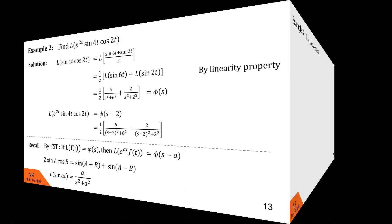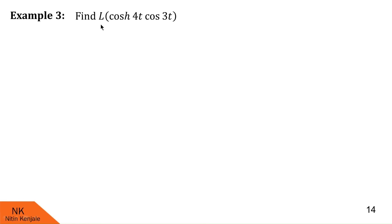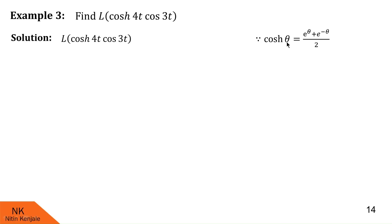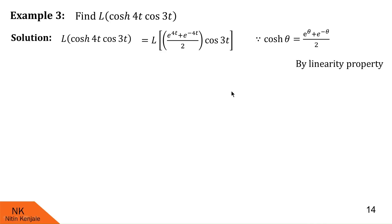Now example 3: find Laplace of cosh 4t into cos 3t. There is no explicit exponential term, but hyperbolic cosine has an exponential form: cosh θ = (e raised to θ + e raised to minus θ) upon 2. So cosh 4t = (e raised to 4t + e raised to minus 4t) upon 2. Using linearity property, Laplace of cosh 4t cos 3t = 1/2 times [Laplace of e raised to 4t cos 3t + Laplace of e raised to minus 4t cos 3t].